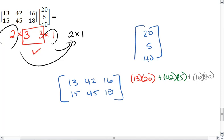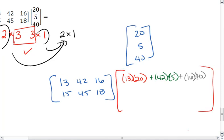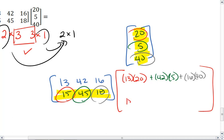For the second element of our new matrix, we're going to take the whole second row of the first matrix and multiply through the first column of our second matrix. And again, we want to match element to element. This one we get 15 times 20, plus 45 times 5, plus 18 times 40.